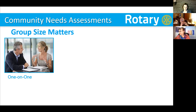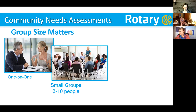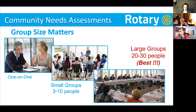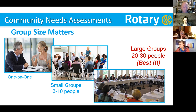Group size matters when you're trying to bring people together. You can do one-on-one interviews like sitting with the police chief, but that takes a lot of time and only gets one perspective. You can also do small groups — say three to ten people — and just have a roundtable discussion about what's working and what's not. But the one I really like is large groups. Twenty to thirty people is probably best — not many more than that because it gets too big to handle in a conversation, but you get a lot of different views, and that's the one I've seen be most successful.